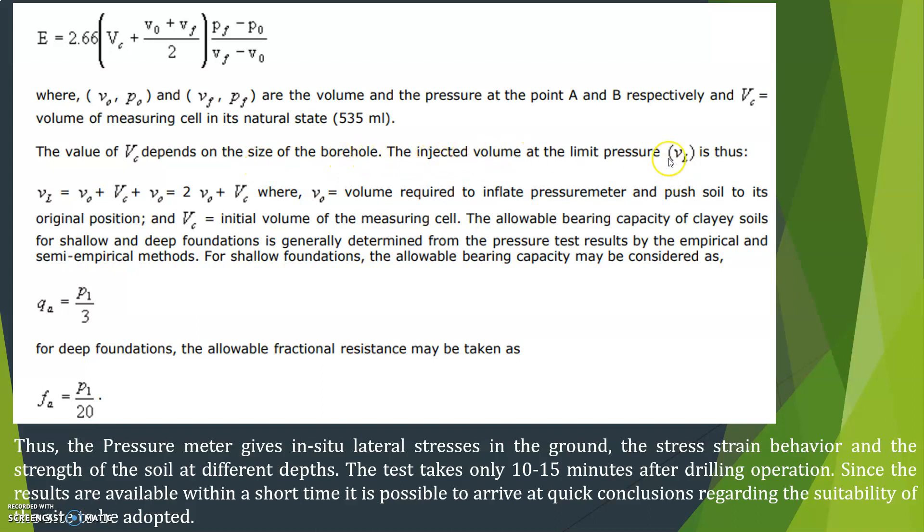The injected volume at the limit pressure Vl is thus given by Vl is equal to V0 plus Vc plus V0 that is equal to 2V0 plus Vc where V0 is equal to volume required to inflate pressuremeter and push soil to its original position and Vc initial volume of the measuring cell.